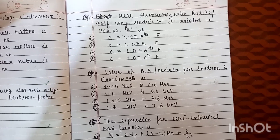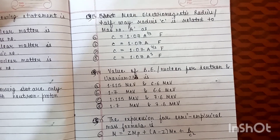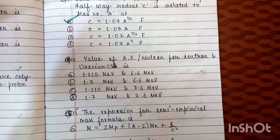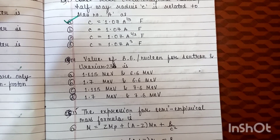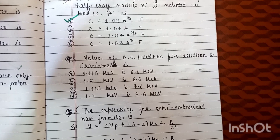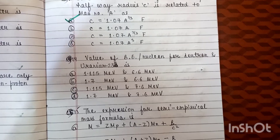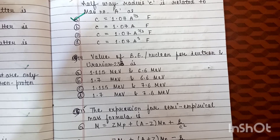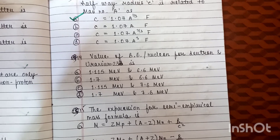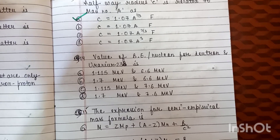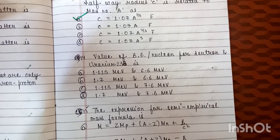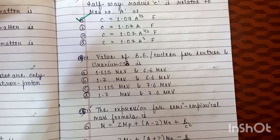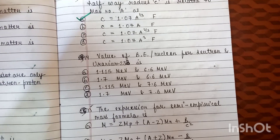The correct option for this is option A. Question number 14: the value of binding energy per nucleon for neutron and uranium-238 is — Option A: 1.115 MeV and 6.6 MeV. Option B: 1.7 MeV and 6.6 MeV. Option C: 1.115 MeV and 7.6 MeV. Option D: 1.7 MeV and 7.6 MeV. The correct option is option C.